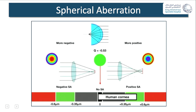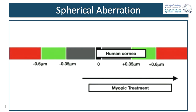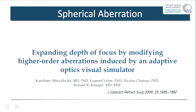The normal human cornea has a Q value between minus 0.1 and minus 0.6. After hyperopic treatment, the Q value changes and spherical aberration shifts toward the negative; after myopic treatment, it shifts toward the positive. This is very important when selecting IOLs after refractive surgery. In cases of myopic ablation, aspheric IOLs are preferred; in cases of hyperopic ablation, spherical IOLs are a better option. Spherical aberration is also the concept used in EDOF IOLs and blended vision to expand depth of focus.